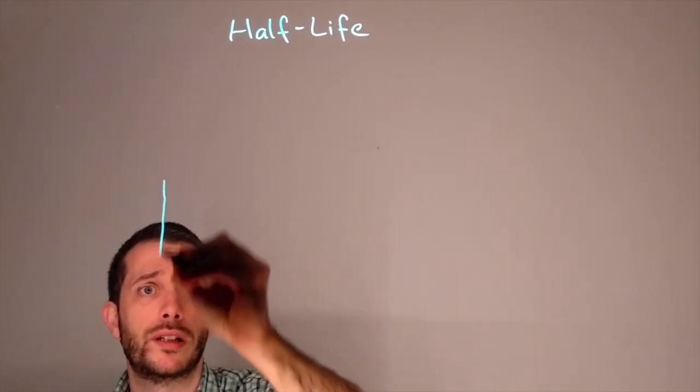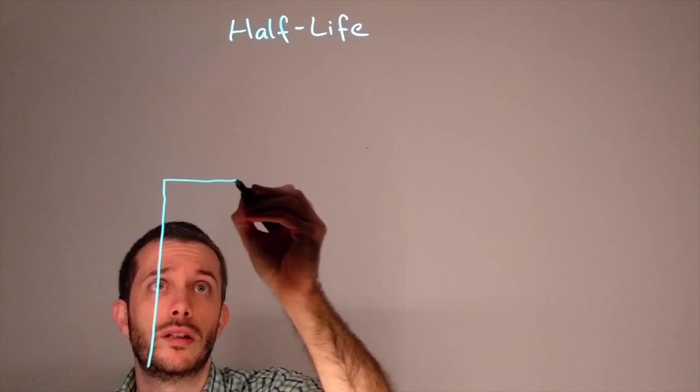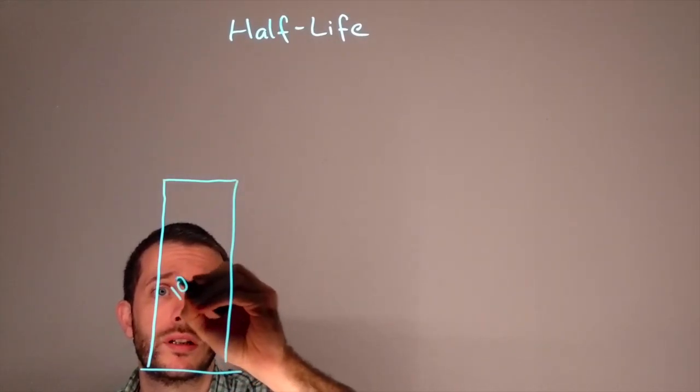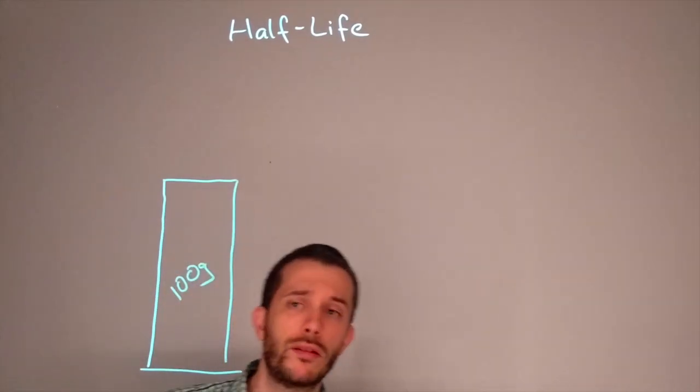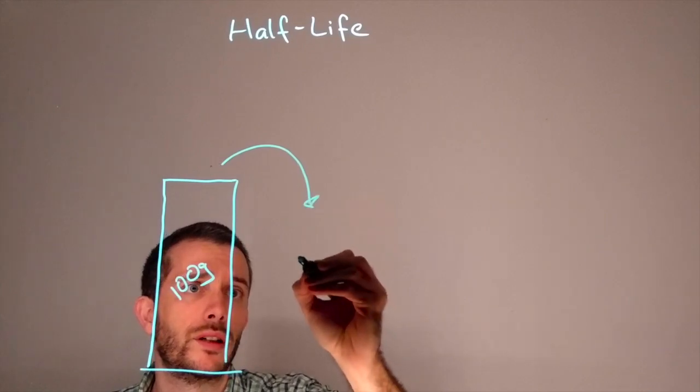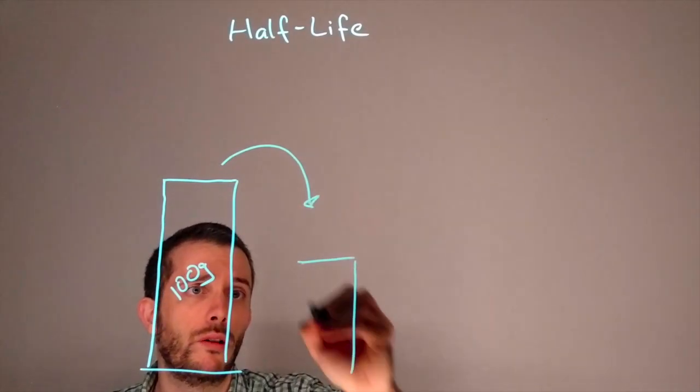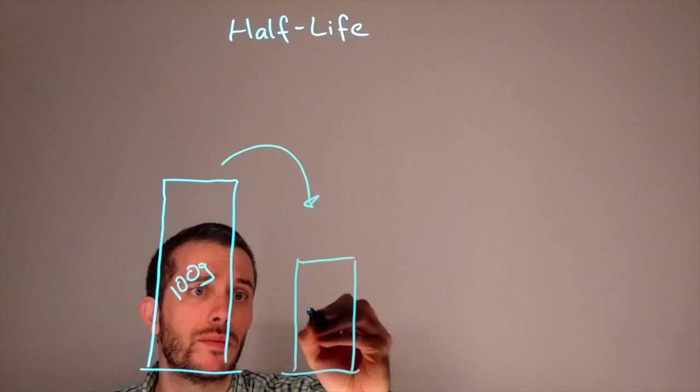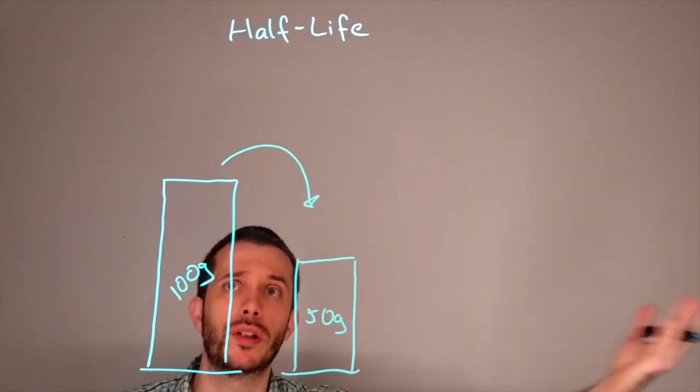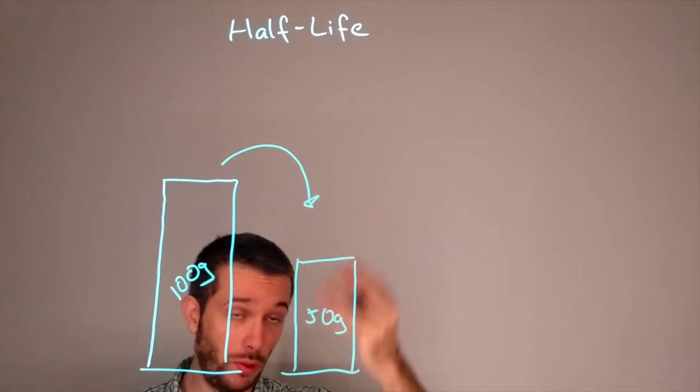So, for example, if I start with 100 grams of radioactive isotopes, after one half-life, I will only have 50 grams left. And the other 50 grams have transformed into another isotope through the decay.